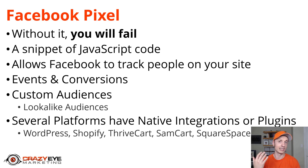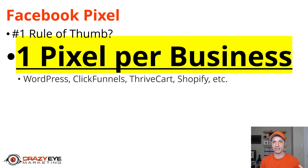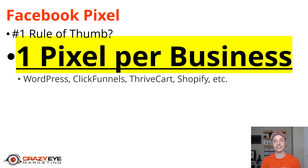I still recommend watching this video because I'll show you how to get to the Pixel, how to install it, and how to create audiences. Now, the number one rule of thumb: one pixel per business. A lot of businesses or entrepreneurs have several different websites or properties — a WordPress website, ClickFunnels funnels, a Shopify store, a SamCart store. However, if they're all for the same business, you use that same pixel across all your different platforms. If you have multiple businesses, you'd have multiple pixels. Hopefully that's crystal clear: one pixel per business.